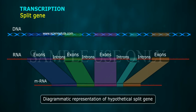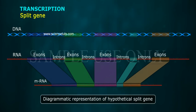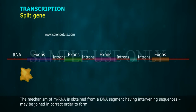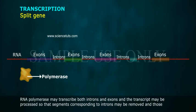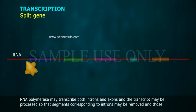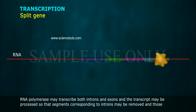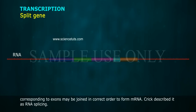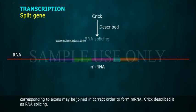A diagrammatic representation of a hypothetical split gene shows the mechanism by which mRNA is obtained from a DNA segment having intervening sequences. RNA polymerase transcribes both introns and exons, and the transcript is then processed so that segments corresponding to introns are removed and those corresponding to exons are joined in the correct order to form mRNA. Crick described this process as RNA splicing.